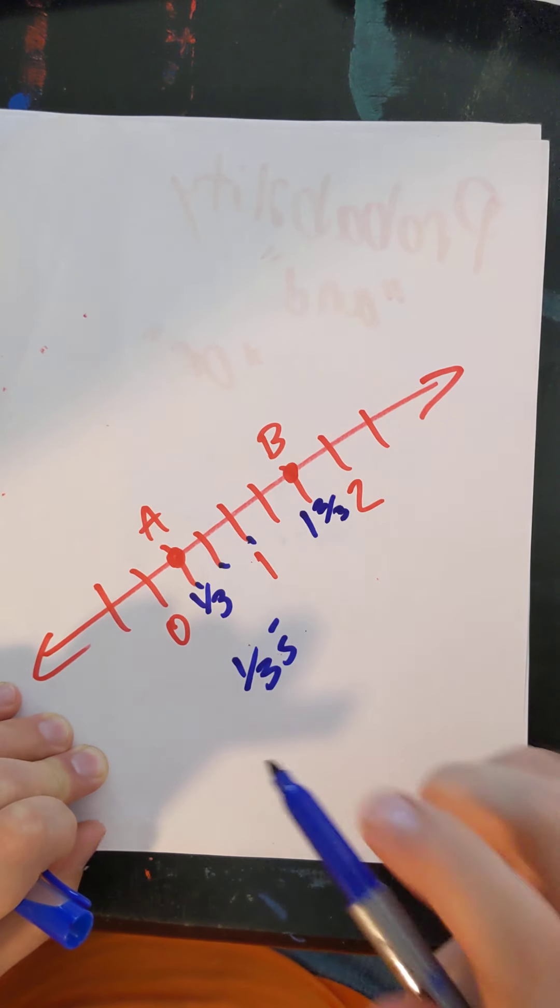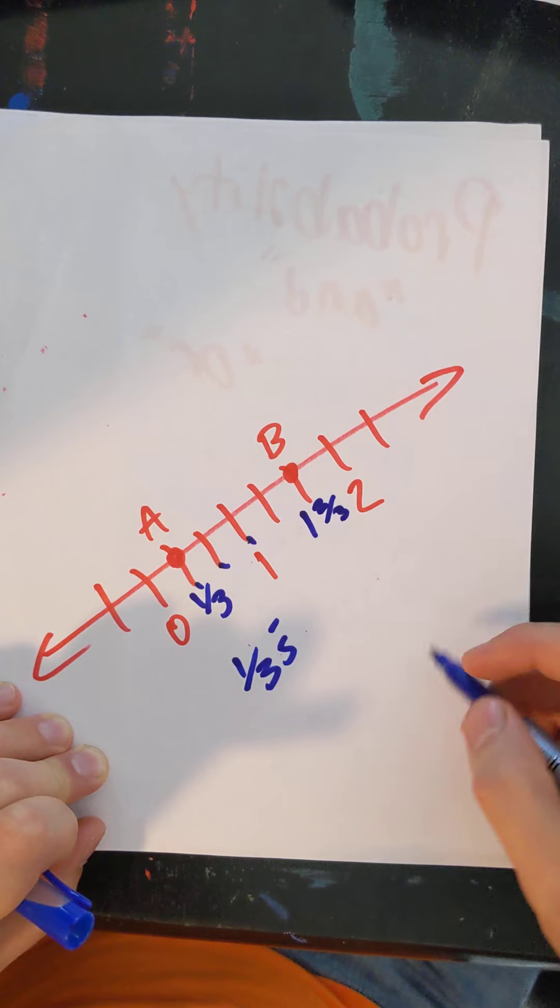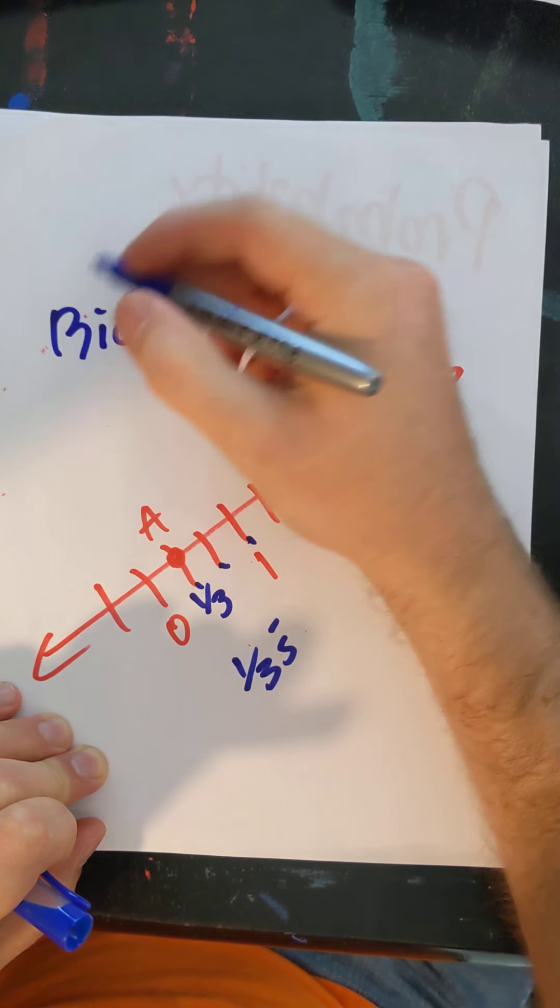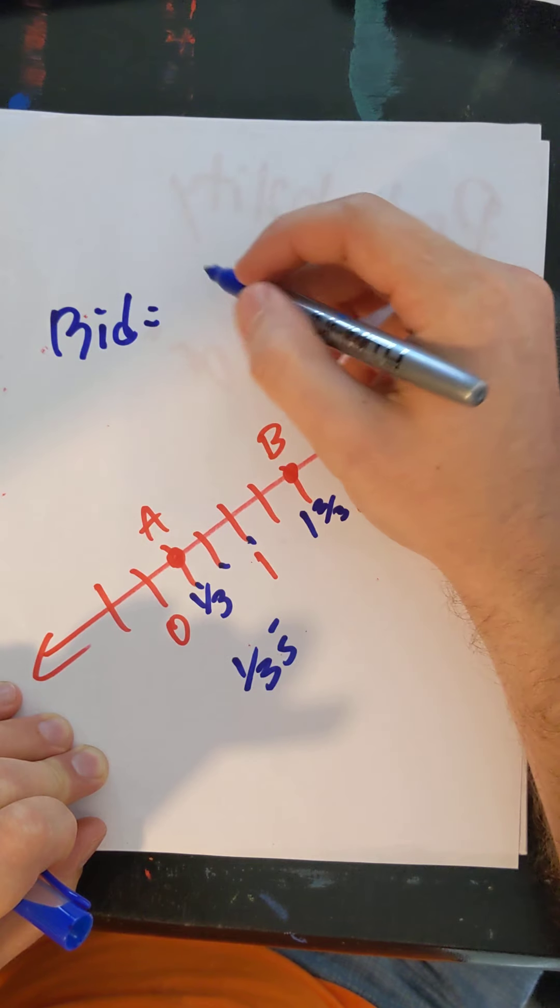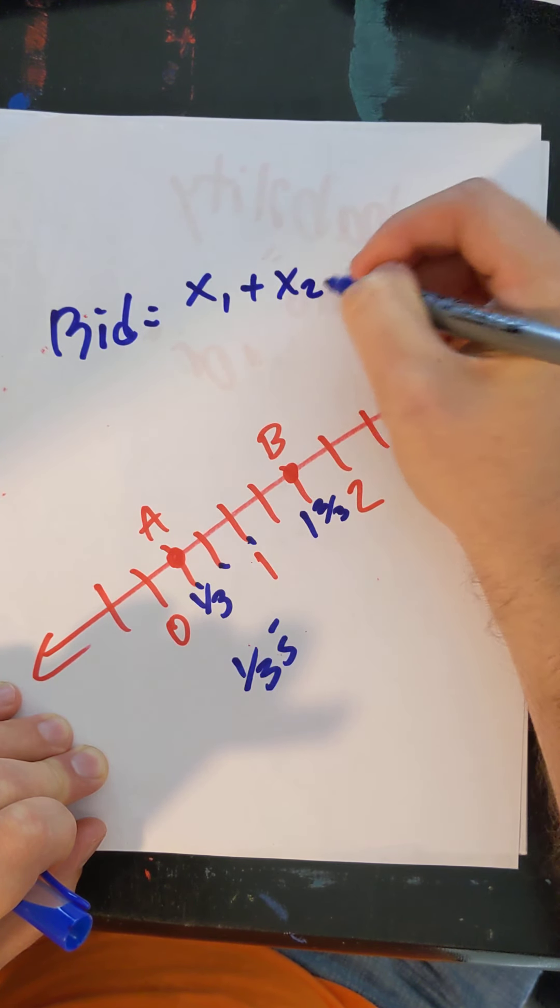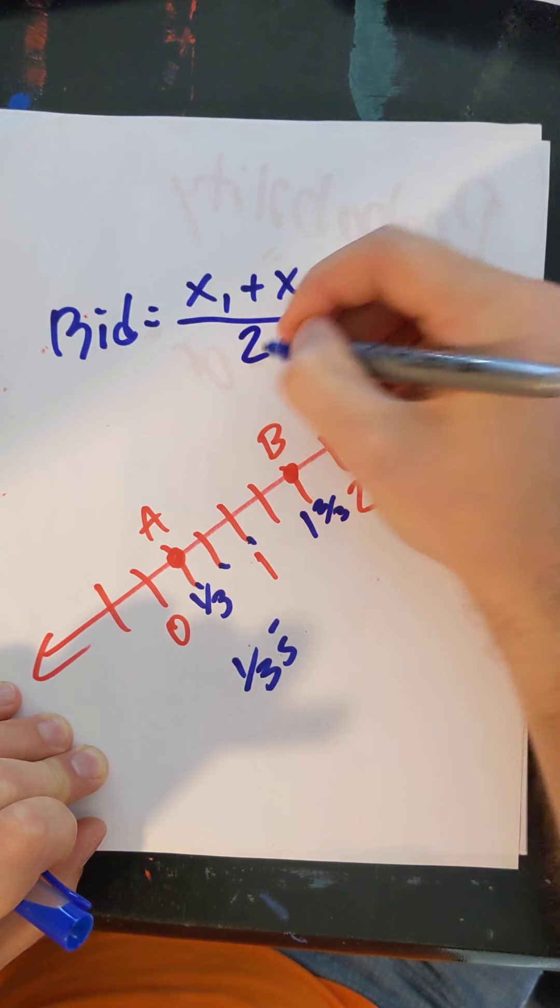So if I want to find the midpoint in between one third and one and two thirds, all I have to do is use my handy dandy midpoint formula. That's supposed to be an M. It just looks hideous. So you take your value and your other value, we'll call these the endpoints, and we add them and we divide by two.